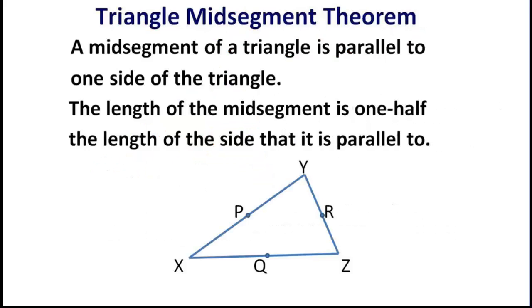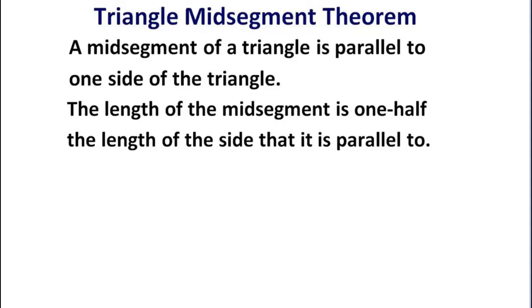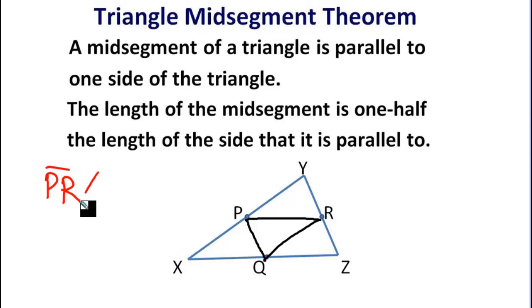There's the theorem to go along with this, brilliantly entitled the triangle mid-segment theorem. It says a mid-segment of a triangle is parallel to one side of the triangle, specifically the one it's not chopping into two equal pieces. Not only that, but the length of the mid-segment is one-half the length of the side that it's parallel to. A picture, perhaps. Here's our triangle XYZ back. What the triangle mid-segment theorem is saying is that side PR, this mid-segment, is parallel to side XZ. And length PR is equal to one-half length XZ. So that is comparing PR with XZ. They're parallel.